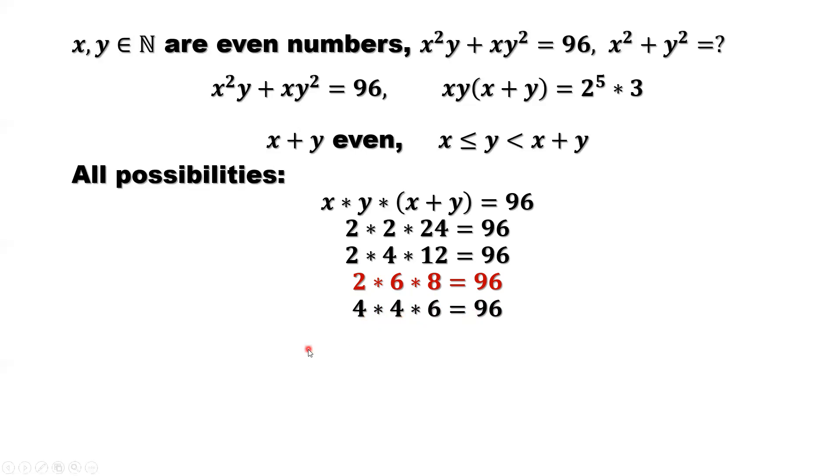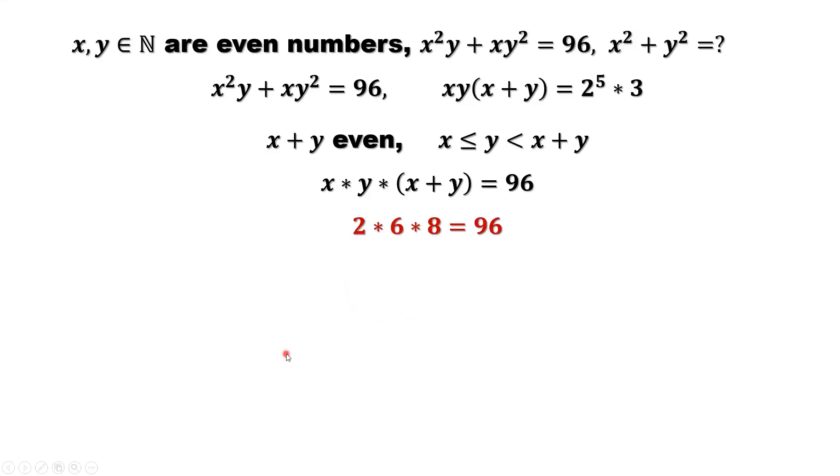Do we have more? No. If we change this number to 6, this number should be 4. That's not in the ascending order. Those 4 are only possibilities. By checking, we only have one solution. That's 2, 6 times 8 equals 96. What does this mean? This means x equals 2, y equals 6.